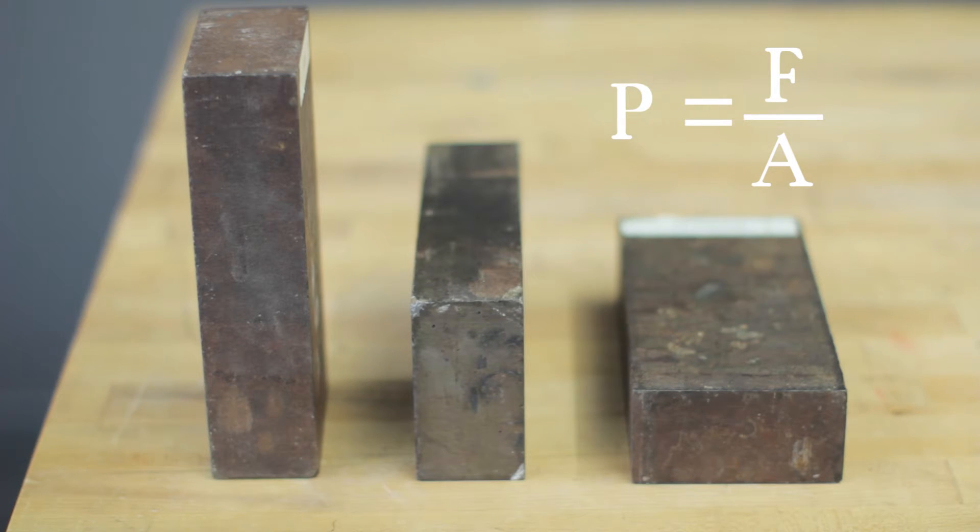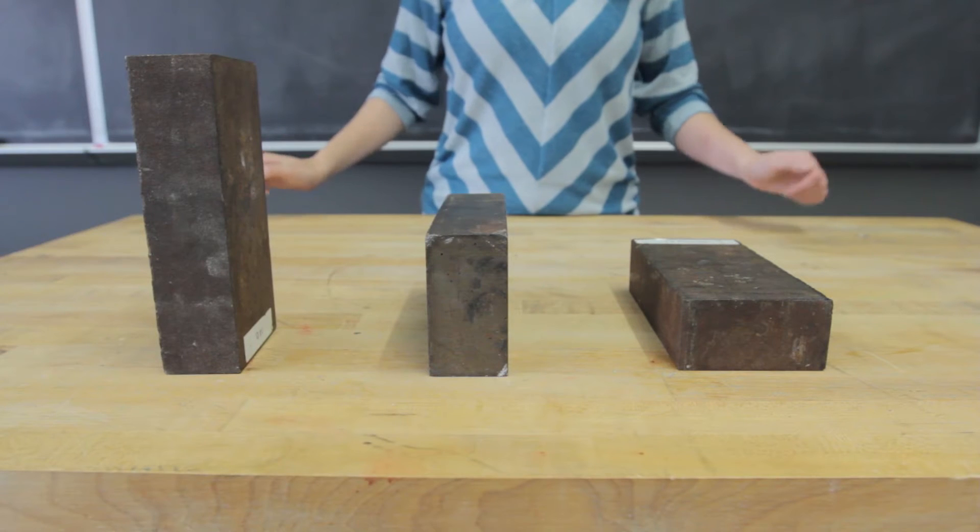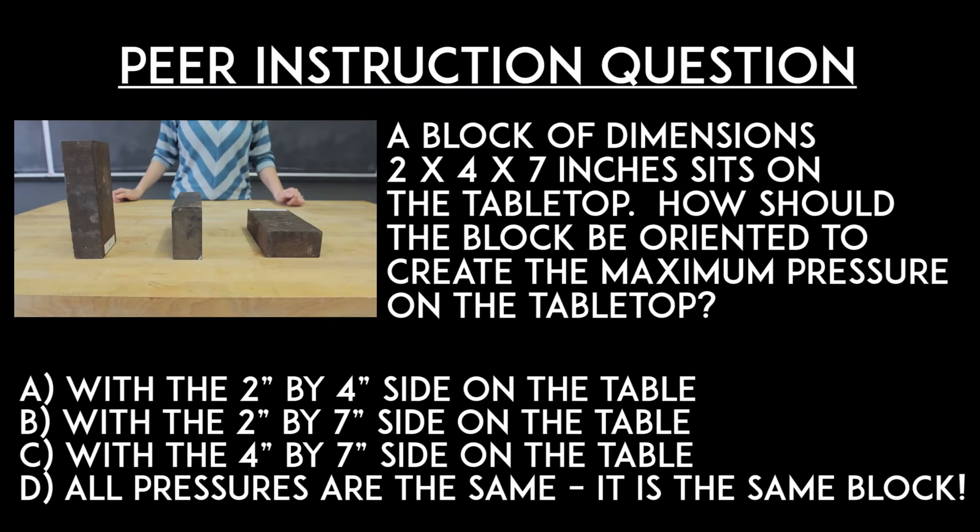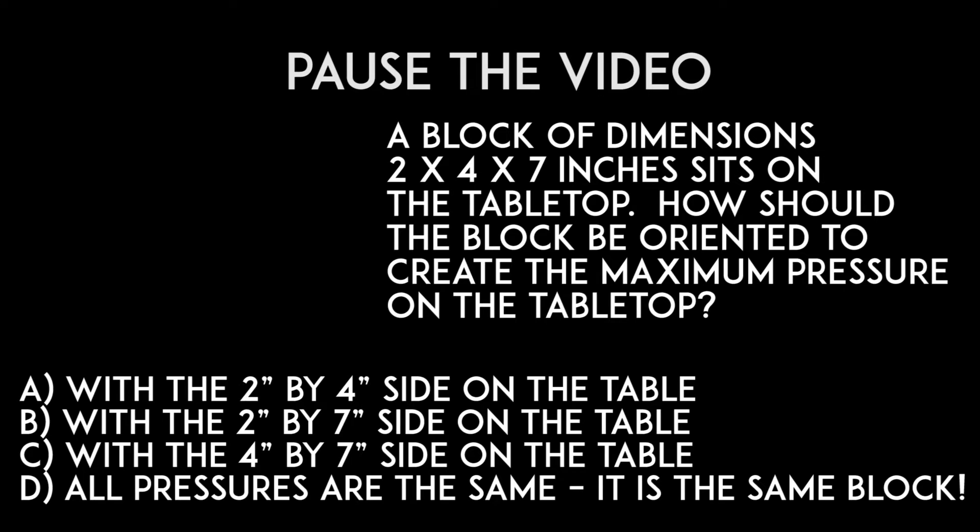Let's explore the pressure equals force divided by area equation in a peer instruction question. A block with dimensions 2 by 4 by 7 inches sits on a tabletop. How should the block be oriented to create the maximum pressure on the tabletop? Please record your vote on a piece of paper and explain your reasoning for choosing this answer. Your instructor will now stop the video.